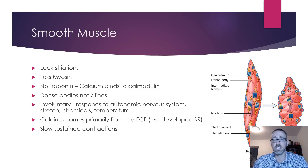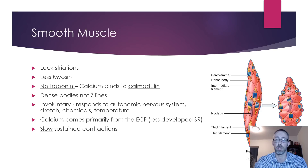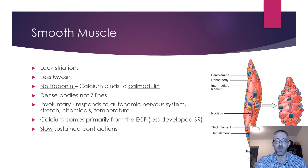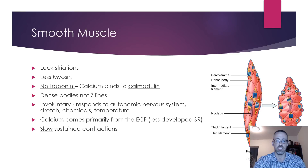Smooth muscle does not have any troponin. In skeletal muscle, calcium binding to troponin removed the tropomyosin to reveal the active binding sites for contraction. There is no troponin in smooth muscle — calcium instead binds to calmodulin, which creates a chain reaction we'll discuss shortly. They also don't have z-discs; instead, the thin filaments (actin) are bound to something called a dense body.